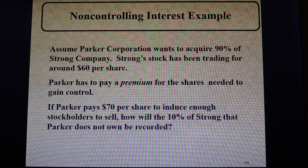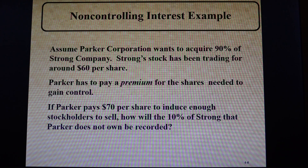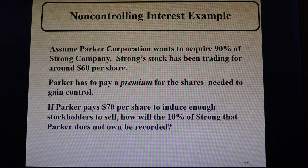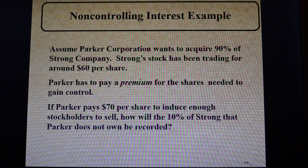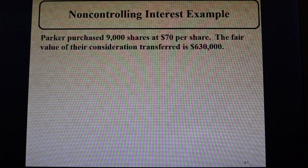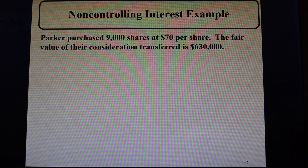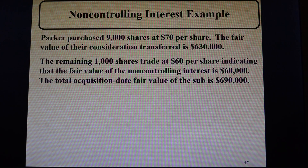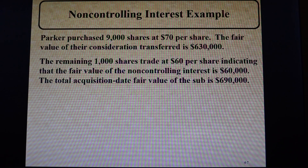So if Parker pays seventy dollars per share to induce enough shareholders to sell, how will the ten percent of Strong that Parker does not own be recorded? It depends. In one scenario, the non-controlling shares continue to sell after the acquisition at sixty dollars per share. Parker purchased 9,000 of the 10,000 outstanding shares — 90 percent — at seventy per share. The value of the consideration transferred is $630,000. The remaining 1,000 shares trade at sixty per share, so that's the fair value of the non-controlling interest: $60,000.